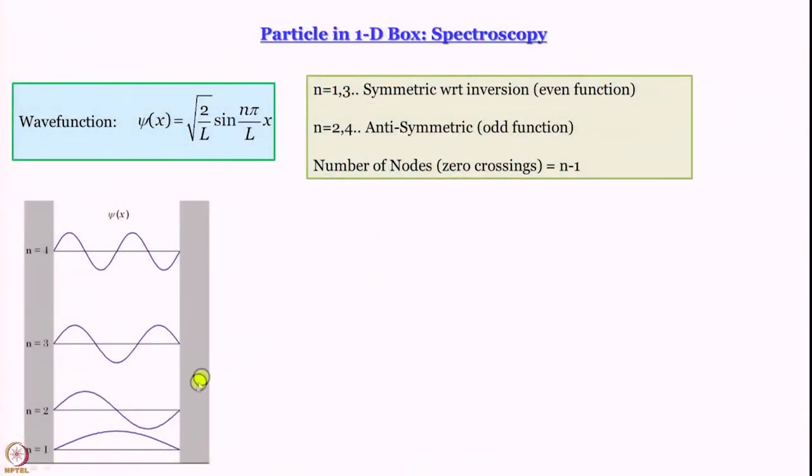Can we go from level 1 to 2? From 1 to 3? From 3 to 4? We determine this by considering the symmetry of the wave functions. Symmetry is an important property that governs many aspects of nature. For those interested in learning symmetry more deeply, there is an NPTEL course on symmetry in chemistry using group theory. What we say here does not require much preparation: the n=1 wave function is symmetric with respect to inversion — if we interchange 0 and L, the wave function remains the same.